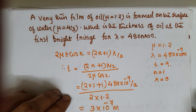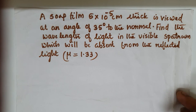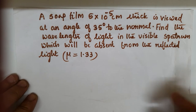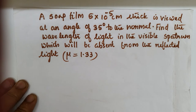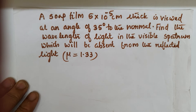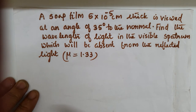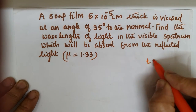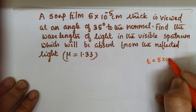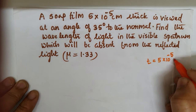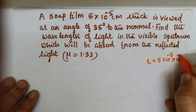The second problem: a soap film 5×10⁻⁵ centimeter thick is viewed at an angle of 35 degrees to the normal. Find the wavelength of light in the visible spectrum which will be absent from the reflected light. The thickness t is given as 5×10⁻⁵ centimeter, which we can represent in meters as 5×10⁻⁷ meter.